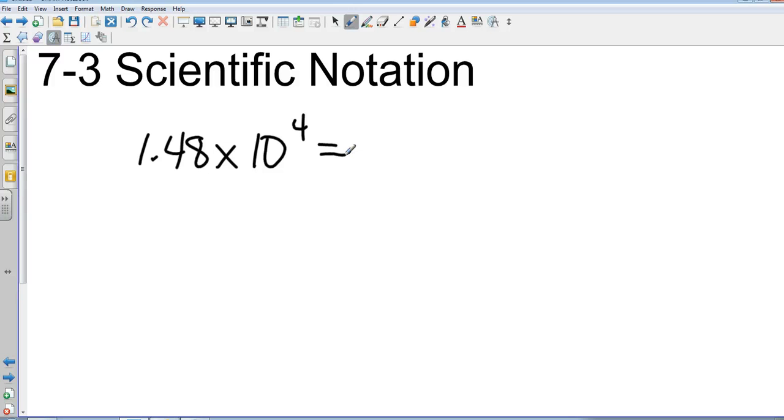So what I want you to do is take 1.48 out to the right-hand side, and then whatever the power is, because that's a positive power, I'm going to move that decimal four spaces. And because it's positive, I'm going to go to the right. One, two, three, four. And whatever I have in my spaces, I'm going to fill with zeros. So that gives me an answer of 14,800.